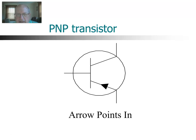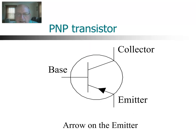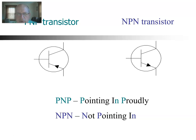Here's a PNP transistor. It's exactly the same as the NPN, except the direction of the arrow — for a PNP transistor the arrow points inward. You can rotate or flip it as needed. The leads are named exactly the same: the lead with the arrow is the emitter, opposite that is the collector, and perpendicularly is the base. A helpful memory aid: PNP — 'pointing in proudly.' And NPN is 'not pointing in.'